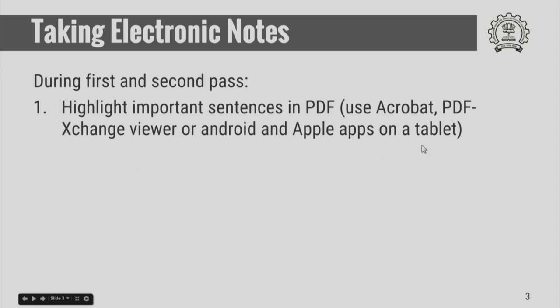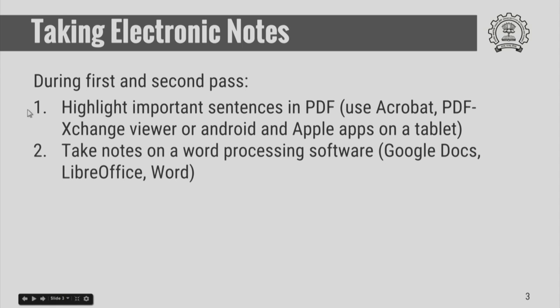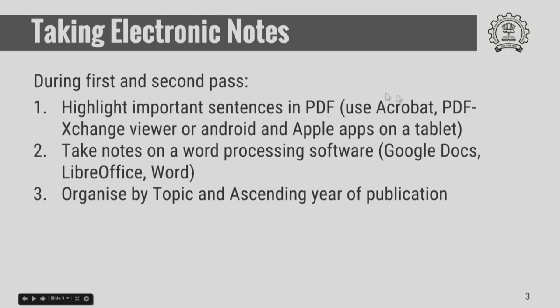You need to transfer these highlighted sentences to a word processing software. It could be Google Docs, LibreOffice or Word. In your word processing software, you have these topics arranged serially. You could have topics and subtopics, and within each topic, you organize the references in ascending year of publication. This is important as it helps you picture which came first.